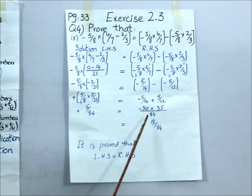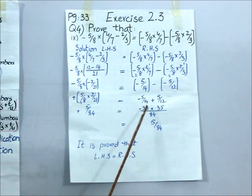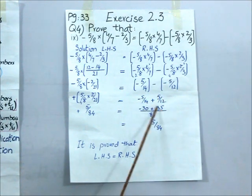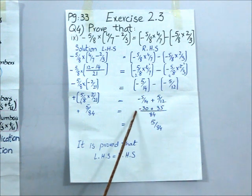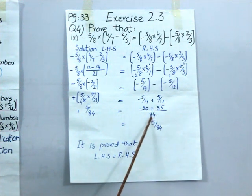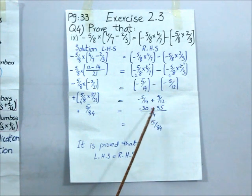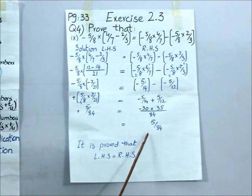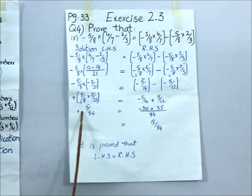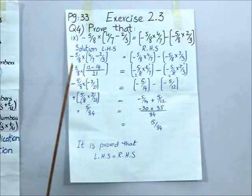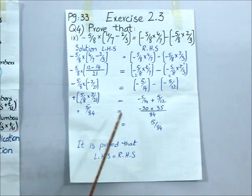To add rational numbers we must have the same denominator, so I take the LCM and get 84 as the common denominator. 14 goes into 84 six times, so multiply numerator by 6 to get 30. 12 goes into 84 seven times, so multiply numerator by 7 to get 35. Applying plus minus is minus, I subtract: 35 is greater and positive, so the answer is positive 5 by 84. Both sides equal 5 by 84, proving left-hand side equals right-hand side. There are other parts in this question which you can solve using the same process.